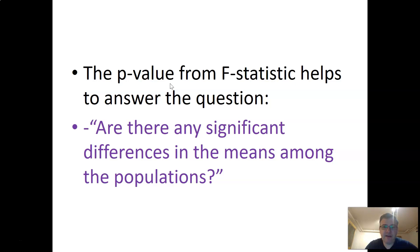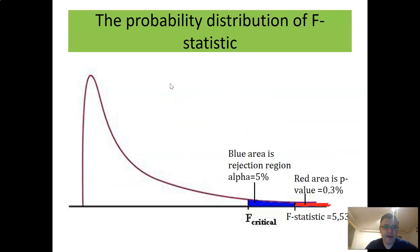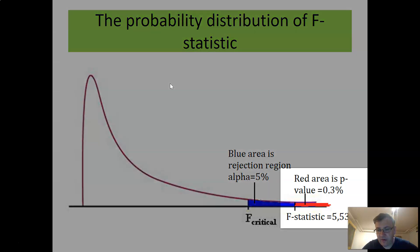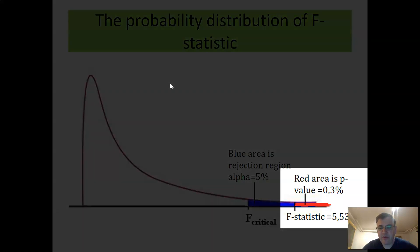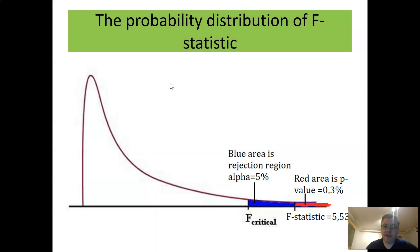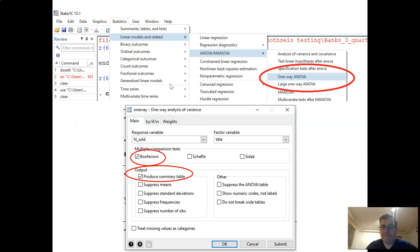The p-value from the F-statistic helps answer the question: are there any significant differences in the means among the populations? In this particular case, the F-statistic is 5.53, which lies within the rejection region. Converting to a p-value gives 0.3 percentage points, which is much less than the five percent significance level. We therefore reject H0, meaning at least one population mean is significantly different from the others.